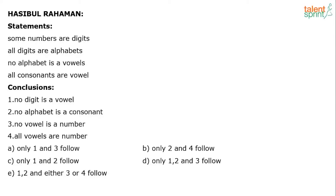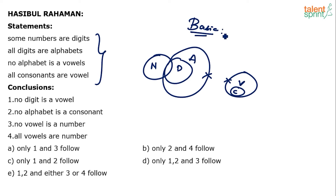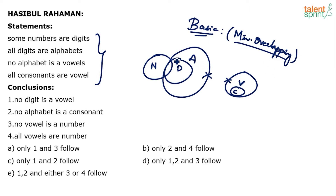This question is on syllogisms — a general question with four statements and four conclusions. Let's draw the basic diagram. The given statements are: some numbers are digits, all digits are alphabets, no alphabet is a vowel, and all consonants are vowel. Please disregard commonly known facts when solving syllogism questions — don't argue that 'no alphabet is a vowel' is impossible. Statements are always considered definitely true. The basic diagram means minimum overlapping, minimum encroachment.